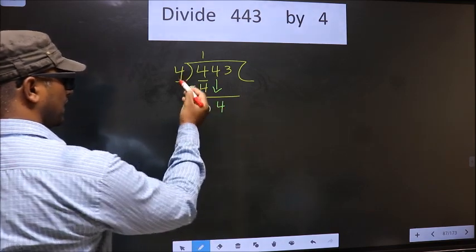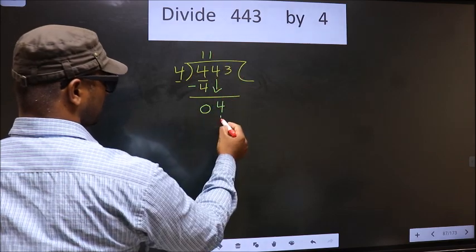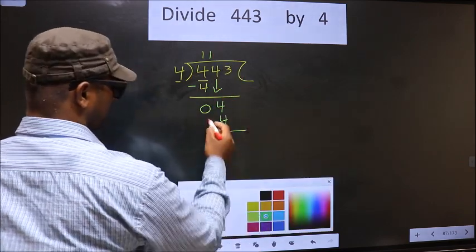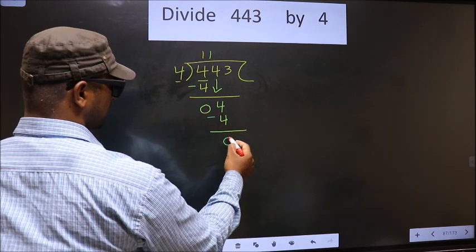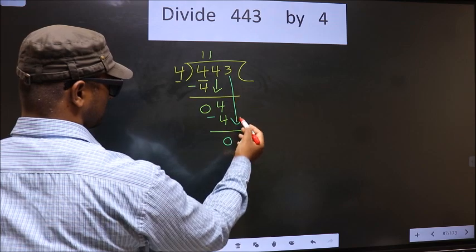Now here we have 4, here also 4. When do we get 4 in the 4 table? 4 once is 4. You subtract: 4 minus 4 is 0. Now you bring down the next number. So 3 down.